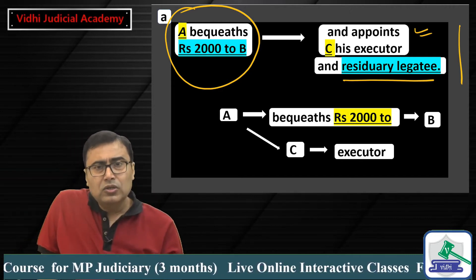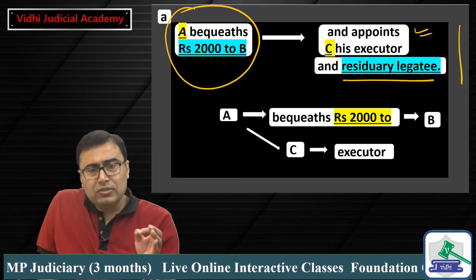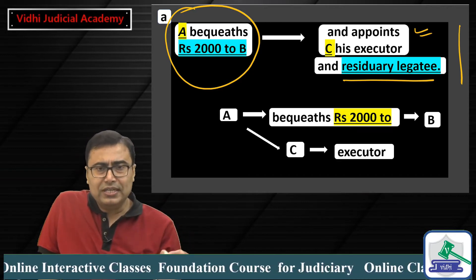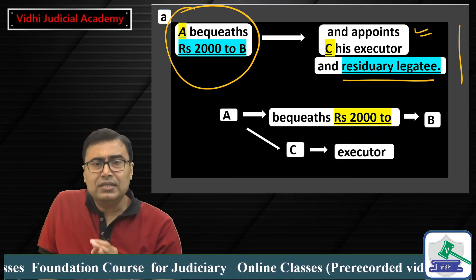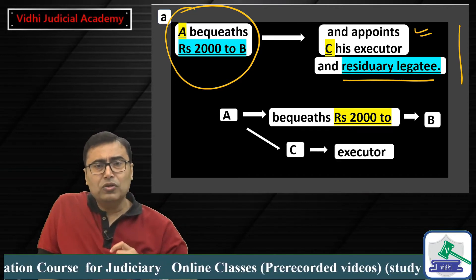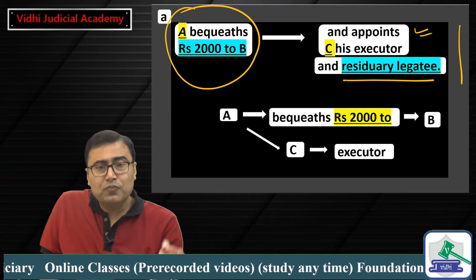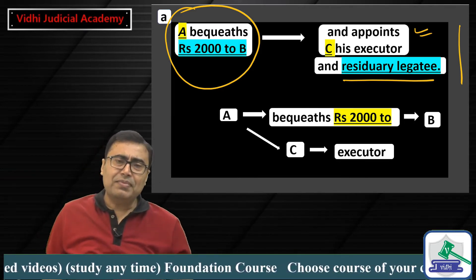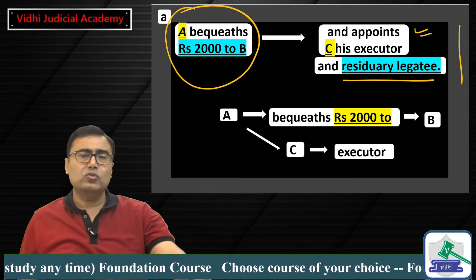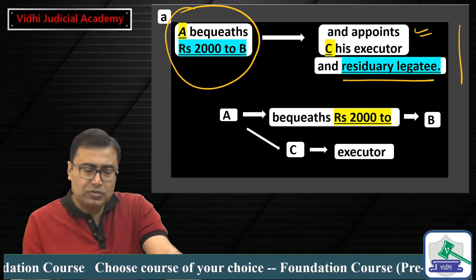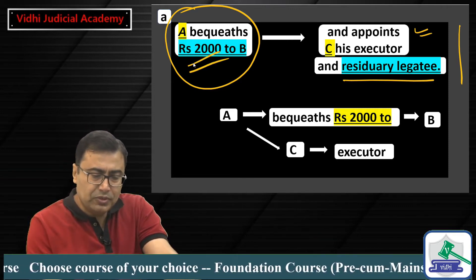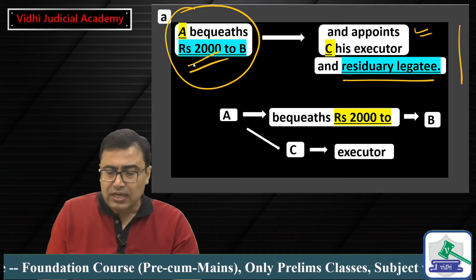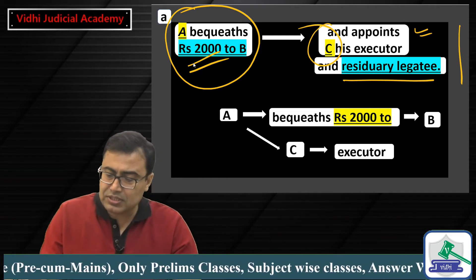A gives rupees 2000 — do hazaar rupay deta hai — to B, out of A's will. Through the will, after A's death, rupees 2000 should be given to B. And who will give this? A appoints C. C is the executor.